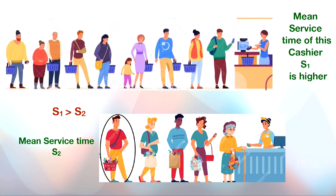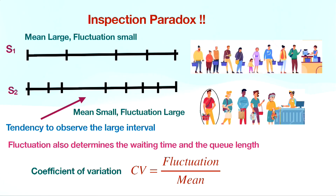Why is this so? Here comes the inspection paradox, which says that we are biased when visiting something at random times. Suppose for the first queue, though the average service time is larger, the fluctuation is small — say the mean is four minutes, sometimes four, sometimes five, sometimes three minutes. But for the second cashier, though the average service time is small, the fluctuation can be large.